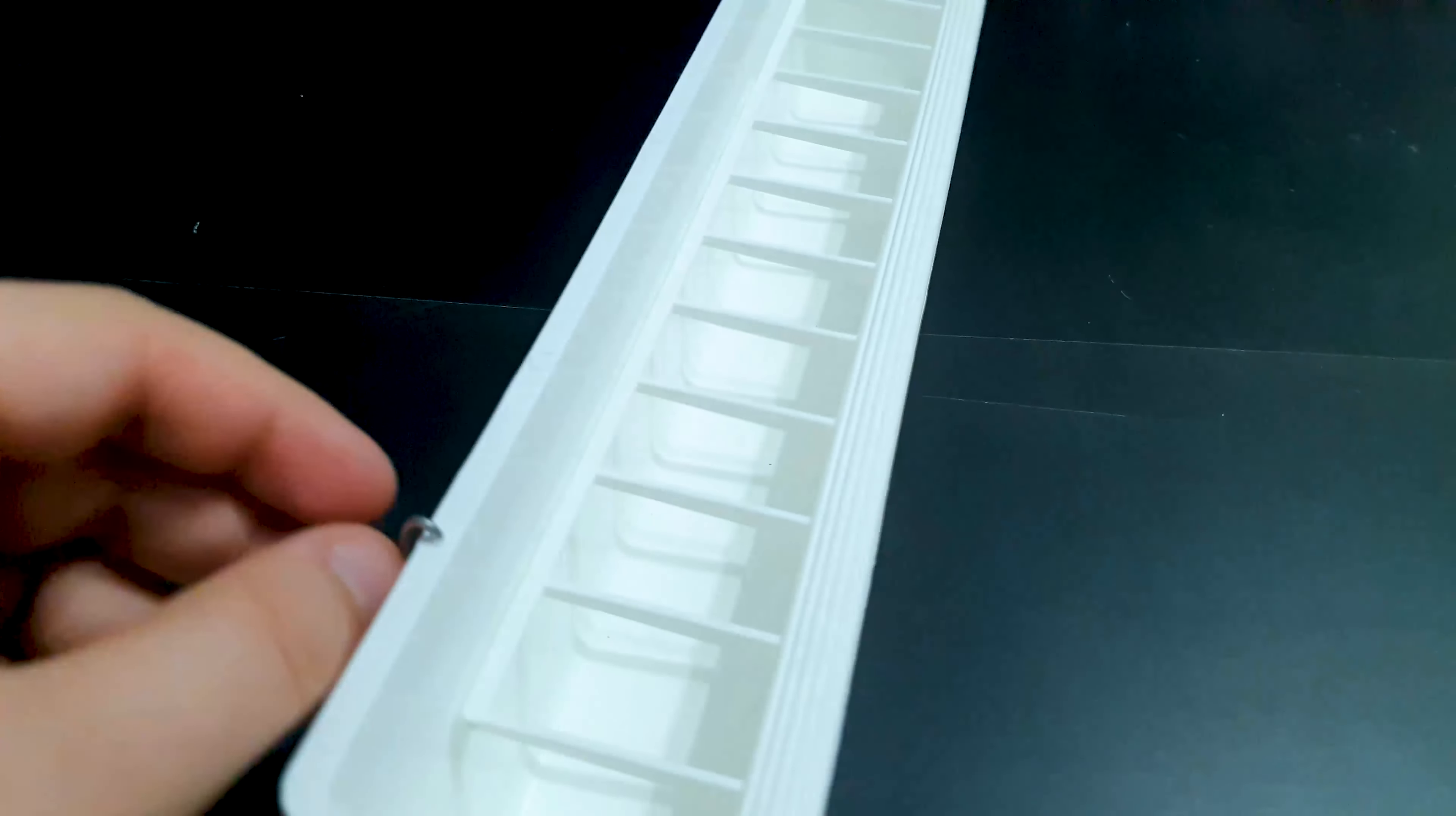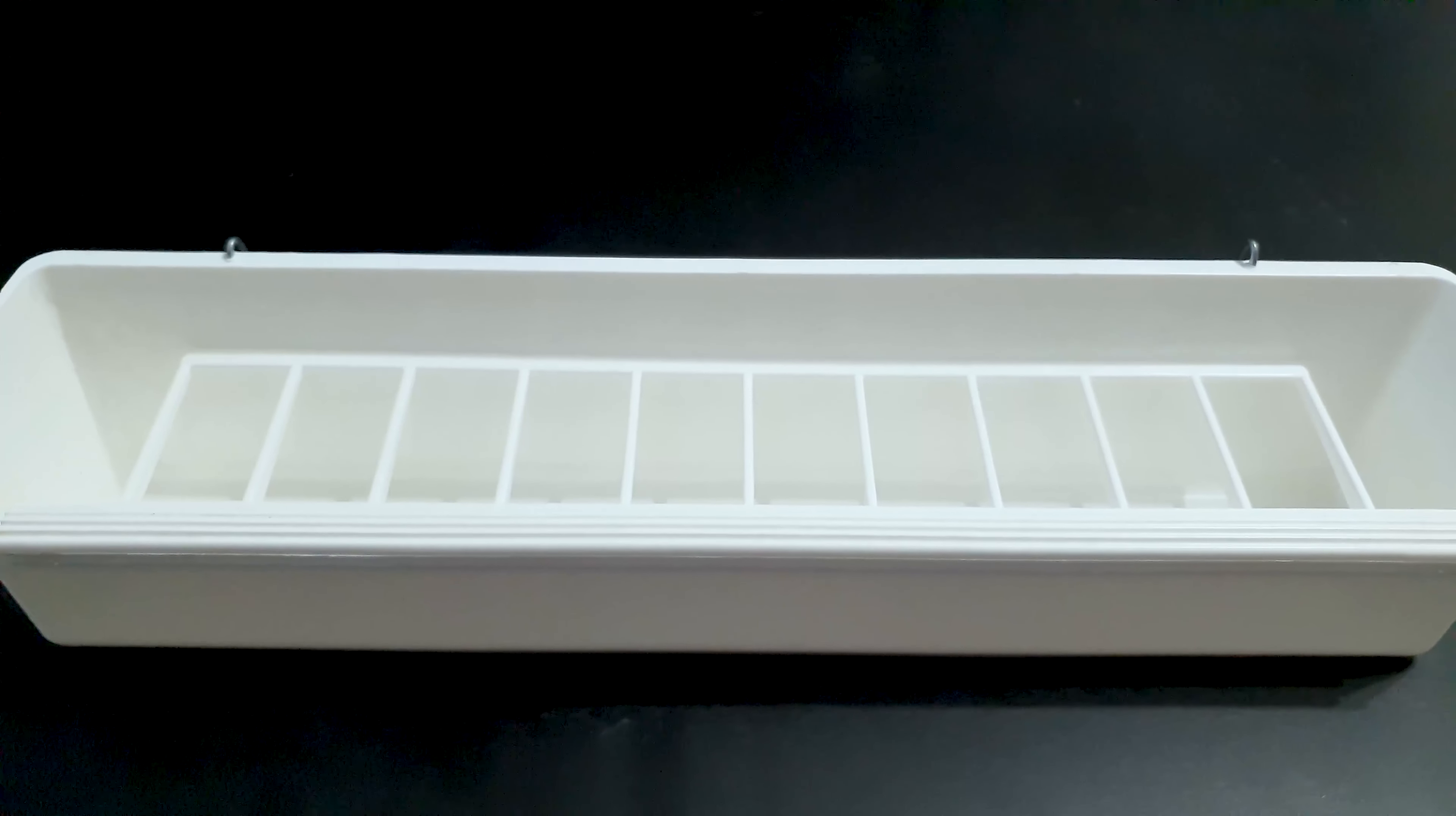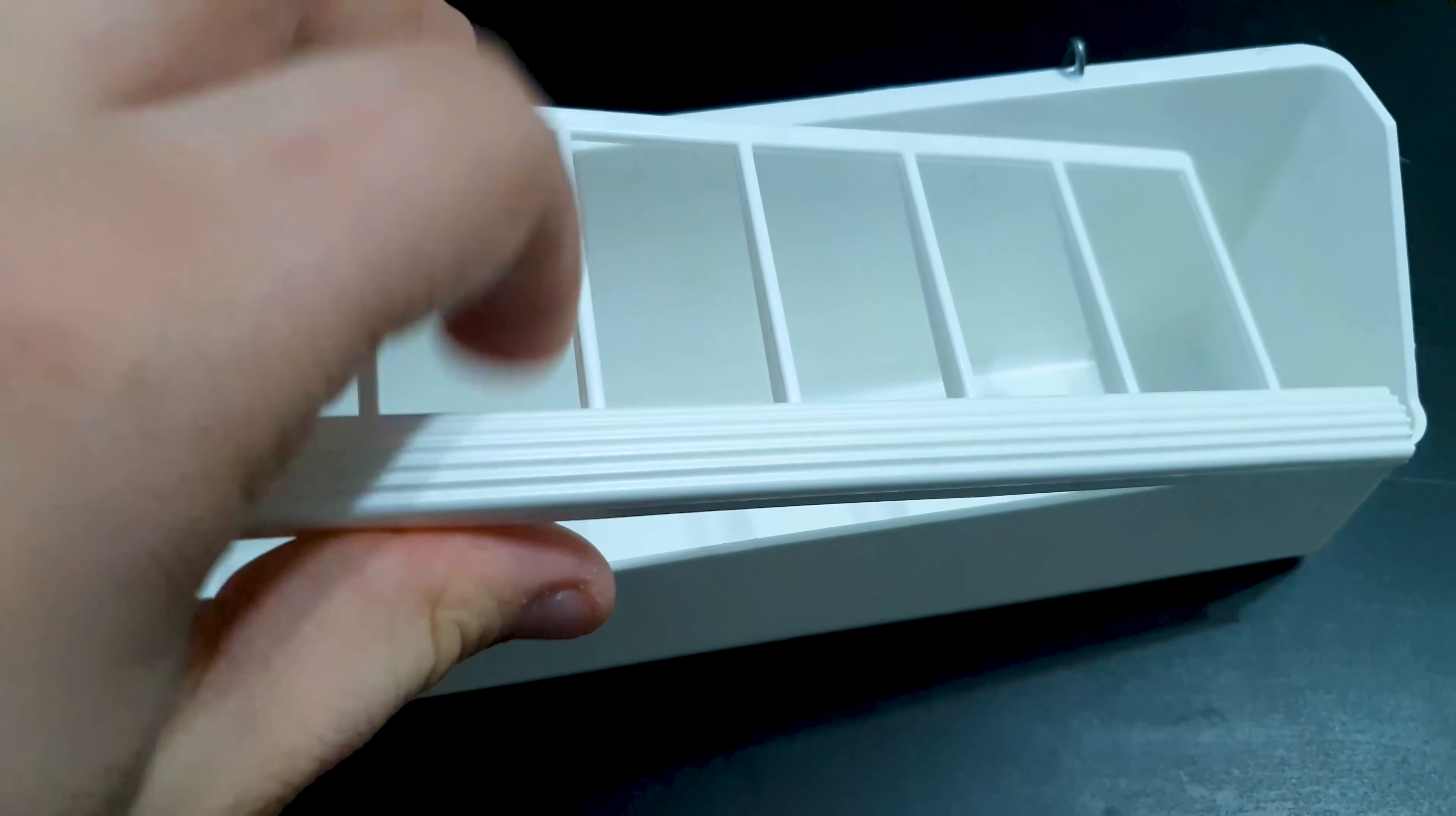Here we have another type of feeder. This is an aviary or flight cage feeder. It goes on the inside, it has these hooks and it hangs on the wire of the cage. It has this ledge for the birds to sit comfortably and eat out, and it has these dividers which prevent the birds from actually hopping inside and getting the food dirty. Again, as with any internal type of feeder, they will leave husks inside.